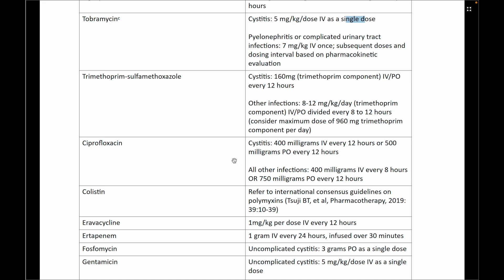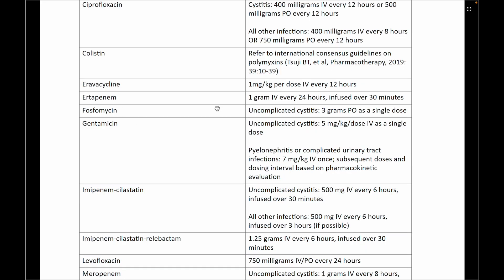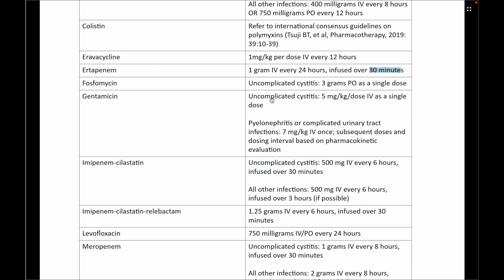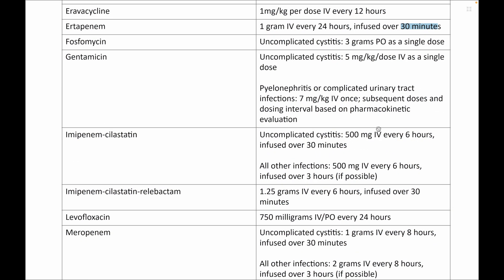Ciprofloxacin for cystitis: 400 mg IV BD or 500 mg oral BD. For all other infections, give it every 8 hours. Ertapenem: 1 gram IV every 24 hours, infused over 30 minutes. Gentamicin: for uncomplicated infections, single dose of 5 mg/kg; for pyelonephritis, 7 mg/kg. Imipenem-cilastatin: 500 mg IV every 6 hours infused over 30 minutes for standard cases; 500 mg IV every 6 hours over 3 hours for complicated cases.